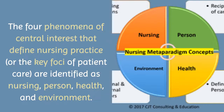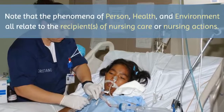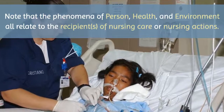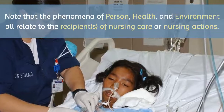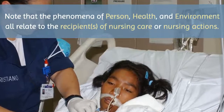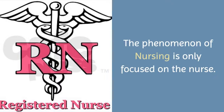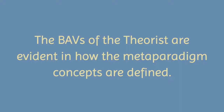All of nursing practice is distilled to these four central phenomena — the basic elements of nursing, what nursing is generally concerned with: nursing, person, health, and environment. Something important to note is that the phenomena of person, health, and environment all relate to the recipients of nursing care or the recipient of nursing actions, while the phenomenon of nursing is focused only on the nurse.